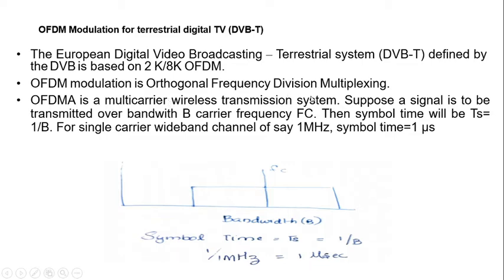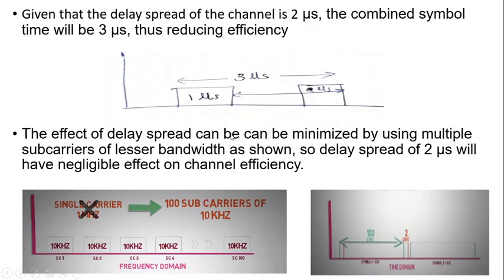OFDM is a multi-carrier wireless transmission system. Suppose you have to transmit a signal over a bandwidth B, carrier frequency FC, with symbol time of 1/B — so in frequency domain the carrier frequency is FC with symbol time of 1 microsecond. If the delay spread of the channel is 2 microseconds, then the combined symbol time becomes 3 microseconds, which reduces efficiency. The delay spread extends the symbol time, reducing channel efficiency.